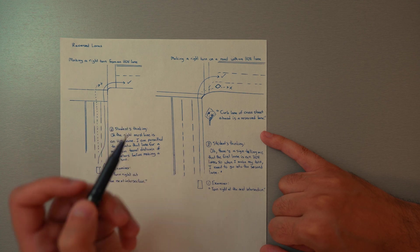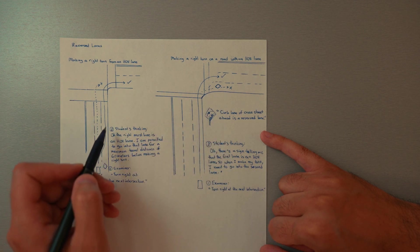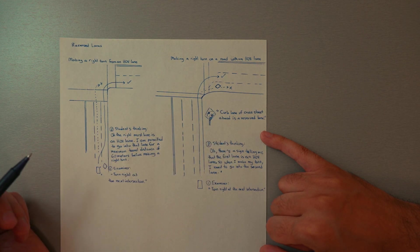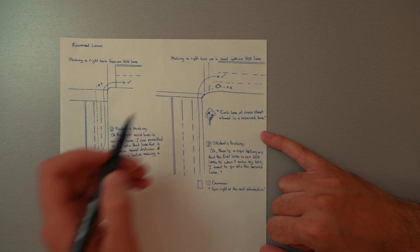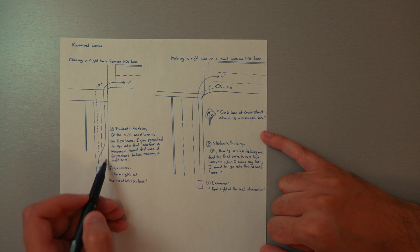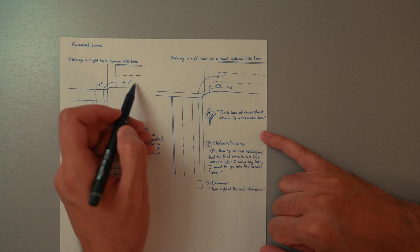But if it doesn't, it's just a bus lane, then you need to stay out of it as you're turning into a new road. But you can go into it for a short period of time if you're going to be making a turn from it.